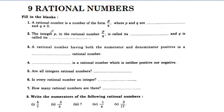The rational number is the number of the form p by q, where p and q are integers and q is not equal to 0. The rational number is in the form p by q, where p and q are integers.